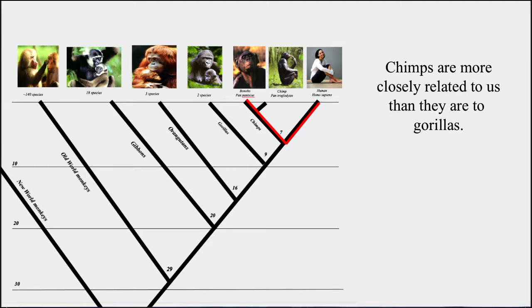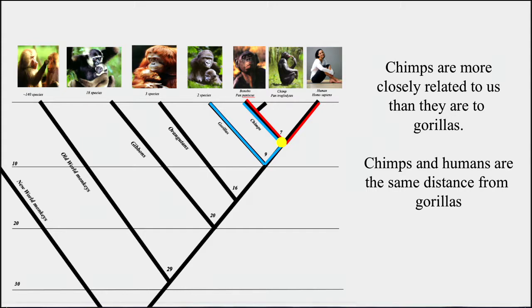Another couple of statements to help us get our bearings about where we came from: chimps are more closely related to us than they are to gorillas. How do we know that? Well look at the distance, the length of those two red lines, that's how far chimps are related to us. How closely related are chimps to gorillas? The blue lines. If you add up the length of the blue it's longer than the length of the red. Therefore chimps are more closely related to humans than chimps are to gorillas. You can also say that chimps and humans are the same distance from gorillas because the common ancestor is the same distance and we've evolved the same since the common ancestor.